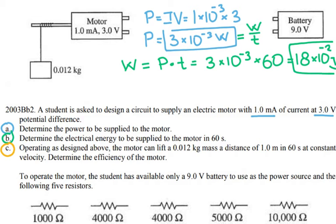So for this part, they give me the mass, the distance it's going to travel, and how long it takes. The important part is constant velocity.